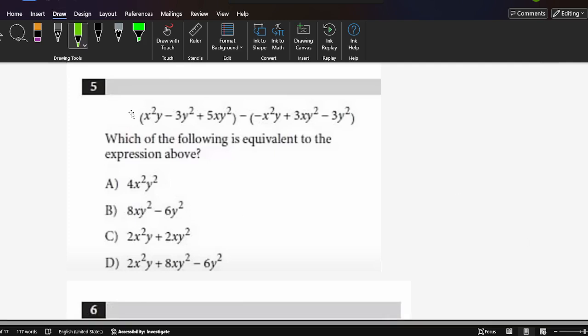Okay, we have a question here: x²y - 3y² + 5xy² minus the brace negative x²y + 3xy² - 3y². Which of the following is equivalent to the expression above?